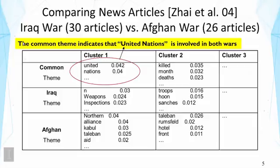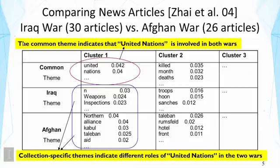The next two cells of word distributions tell us collection-specific variations of the topic of United Nations. In Iraq War, the United Nations was more involved in weapons inspections, whereas in Afghanistan War it was more involved in aid to the Northern Alliance — a different variation of the same topic. So by bringing the context — in this case different wars or different collections of text — we can have topical variations tied to these contexts to reveal the differences in coverage of United Nations in the two wars.